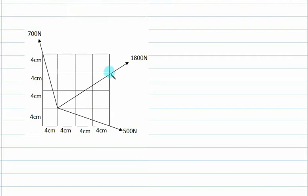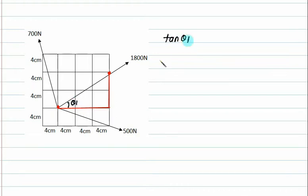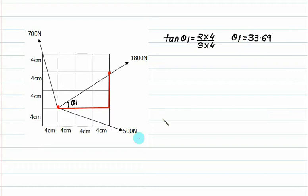This force passes through one corner point. Looking at the right-angle triangle, there are 2 vertical units and 3 horizontal units. So theta1 is determined by the ratio 2 over 3 — that is, 2 times 4 vertical and 3 times 4 horizontal, which simplifies to 2 by 3. Therefore theta1 equals 33.69 degrees.